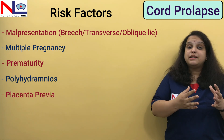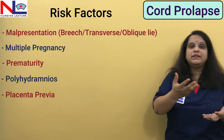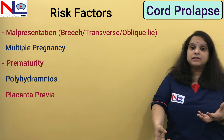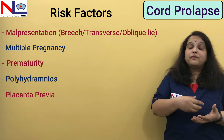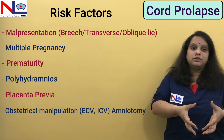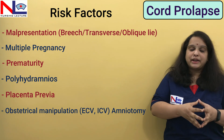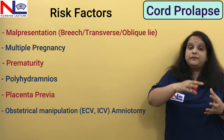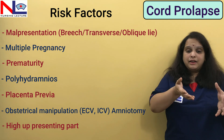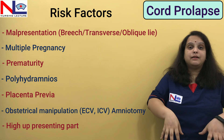If placenta previa is present, the placenta is already attached in the lower segment, so the cord also lies mostly in the lower area. Once the membrane ruptures, there is more chance that the cord comes first. Similarly, if we perform certain obstetrical manipulations to bring the favorable pole down — like external cephalic version or internal cephalic version — or if we accidentally rupture the amniotic membrane, and if we are trying to manipulate the fetus while the membrane ruptures accidentally, then with the empty space in the lower uterine segment there is more chance that the cord can come first.